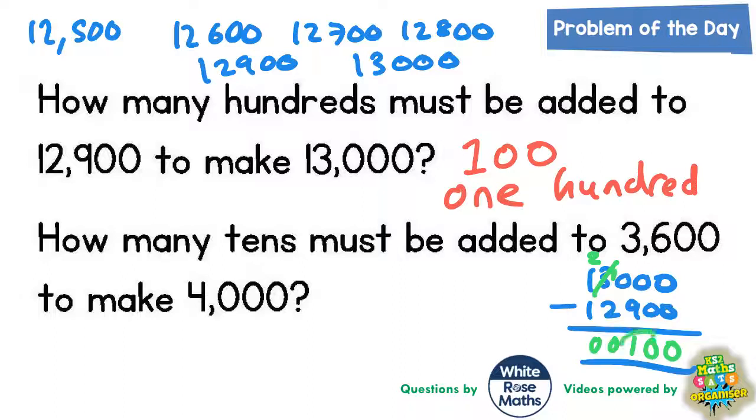The second question says how many tens must be added to 3,600 to make 4,000. Well again you should be able to see that the difference between them is 400. So we need to know how many tens are in 400.